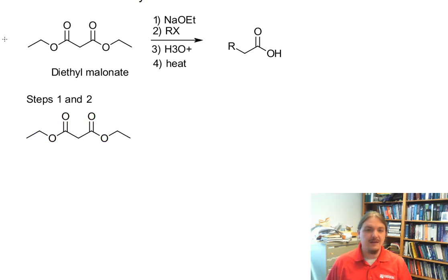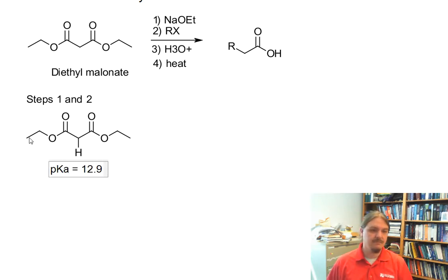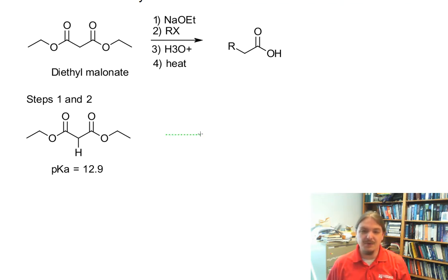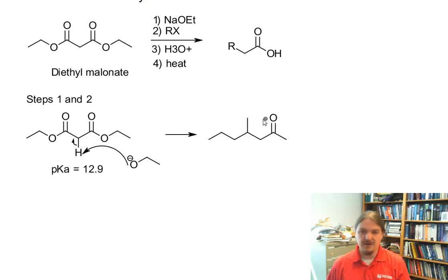First, we have diethylmalonate. Like all such carbon compounds, it's acidic in its alpha position, and it's most acidic in between the two carbonyl groups. The pKa of diethylmalonate is 12.9. It's still a little bit less acidic than some other compounds like this, but it's going to get deprotonated by an appropriate strong base — sodium ethoxide. We want the structure of the base to match the structure of the alkoxy group in the ester so we don't get any hydrolysis or scrambling. We get proton transfer to form the enolate anion of diethylmalonate.